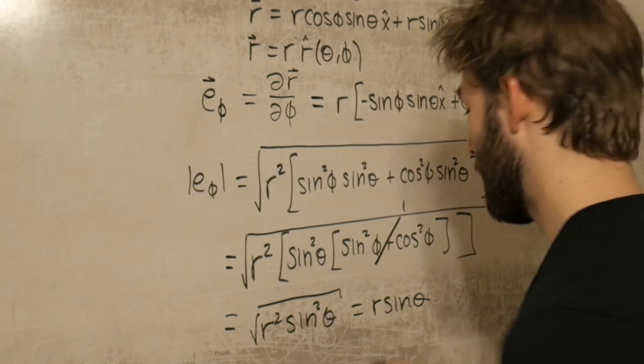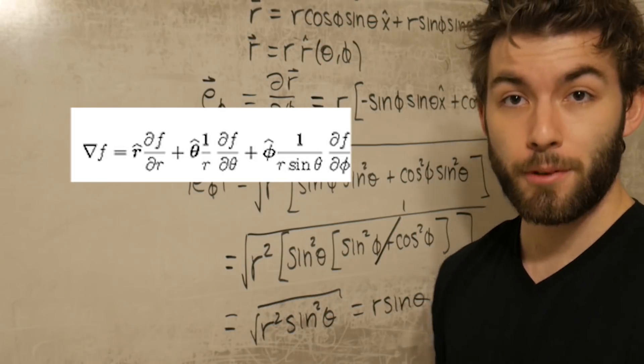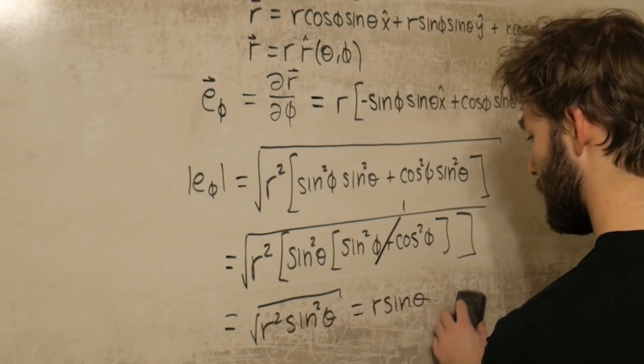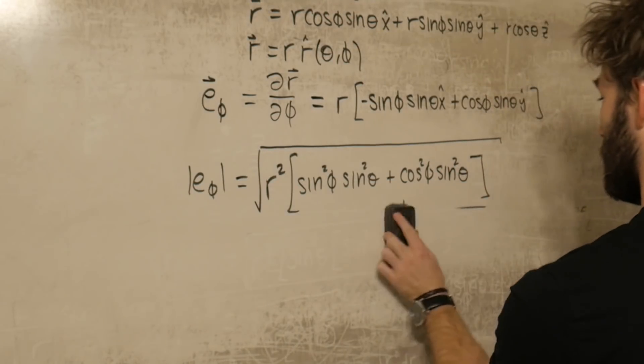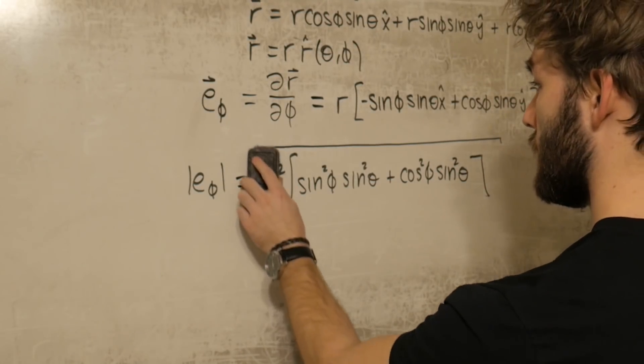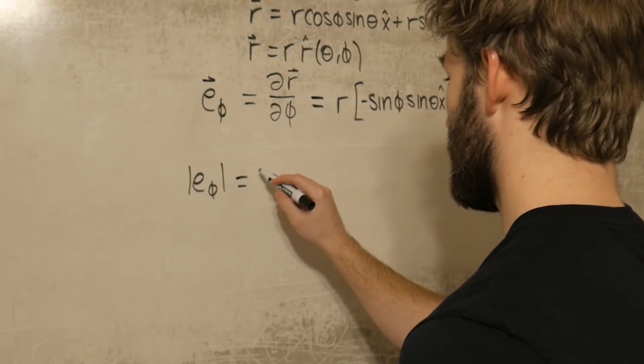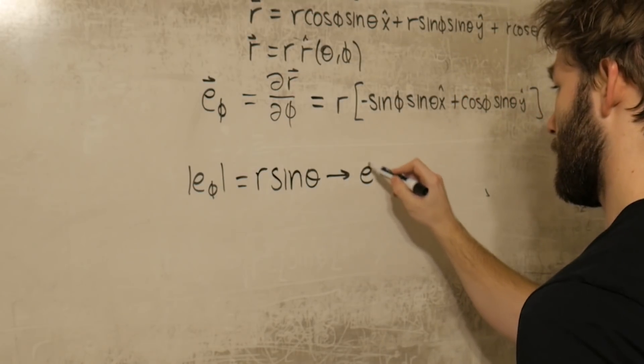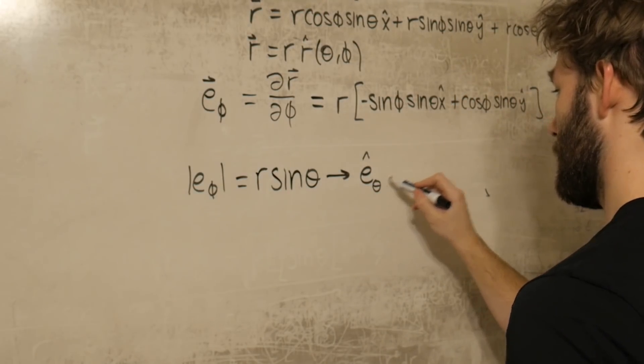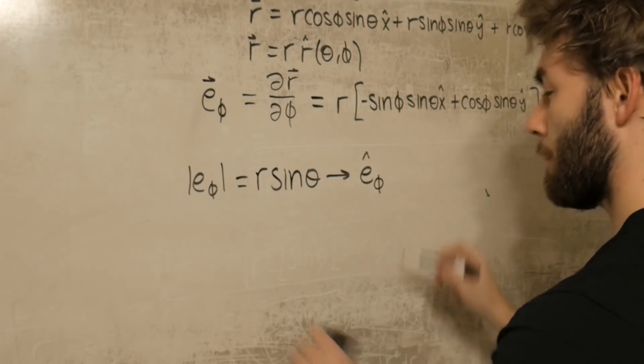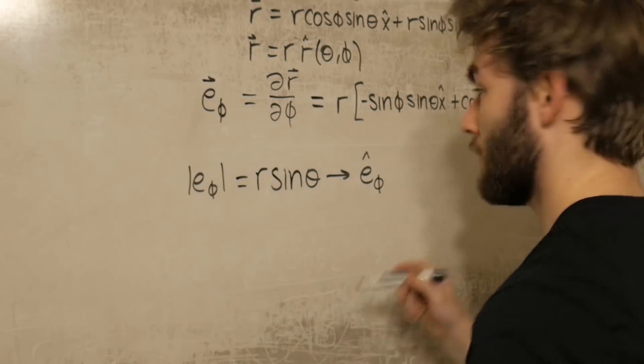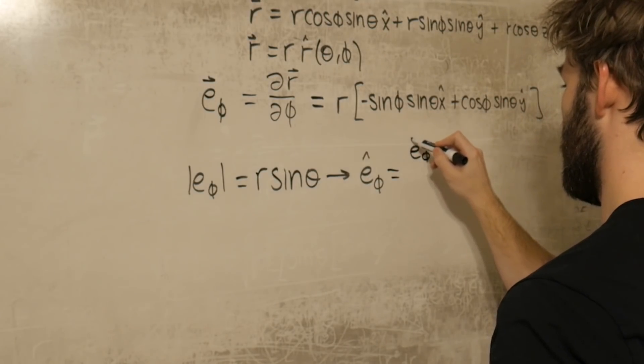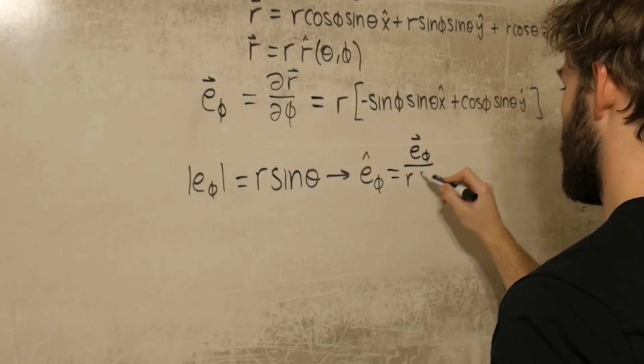Now if you're familiar with the gradient operator in spherical coordinates, all of these scaling factors should start to look a little bit familiar. Okay, so now we know that the magnitude of e phi is just r sine theta, which tells us that the final unit vector in spherical coordinates, I might have just said theta, I meant phi, is equal to e phi over r sine theta.